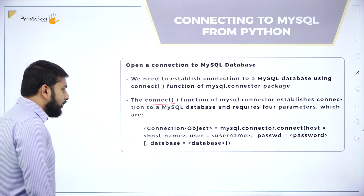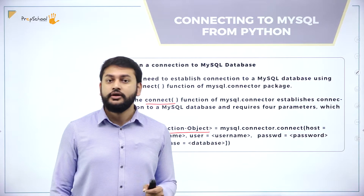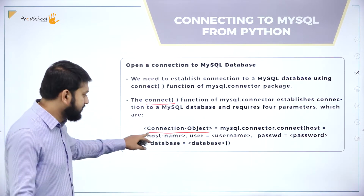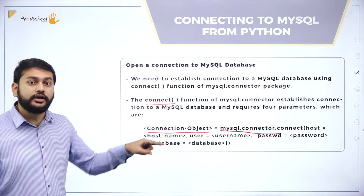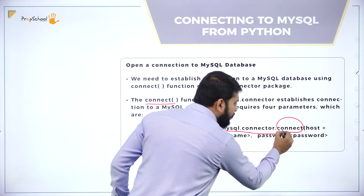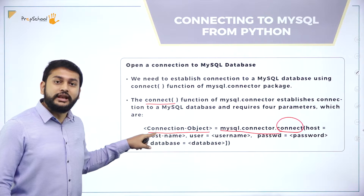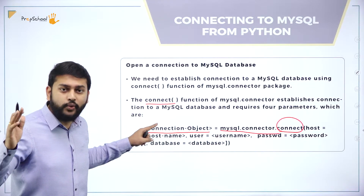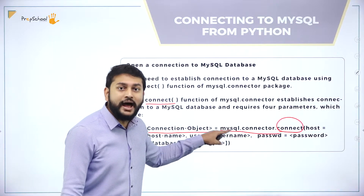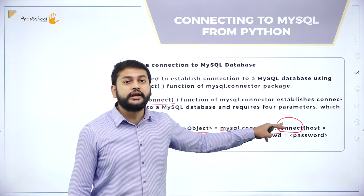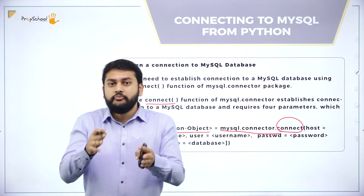Look at the screen carefully. I have to use the function called connect. I will be creating a connection object. The connection object is equal to mysql.connector.connect(). This is very important — if you want to establish the connection between Python and MySQL, you will type the name of the connection object, then equals mysql.connector.connect(). Connect is the function you have to use.